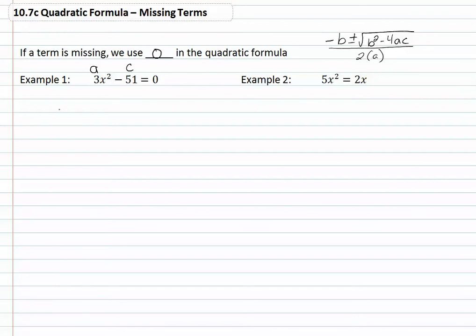We are going to use our zero for our b, so we have zero plus or minus the square root of zero squared minus 4 times our a, which is 3, times our c, which is negative 51, all over 2 times our a, which is 3.